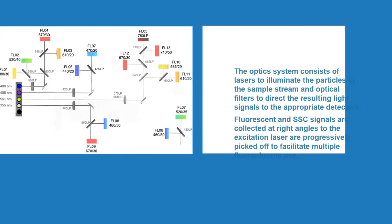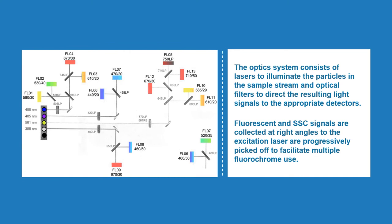The optics system consists of lasers to illuminate particles in the sample stream and optical filters to direct the resulting light signals to appropriate detectors. Fluorescent and SSC signals are collected at right angles to the excitation laser and are progressively picked off to facilitate multiple fluorochrome use.